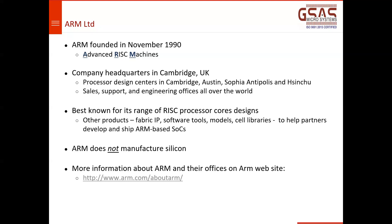Those peripherals include timers, UART, I2C, SPI, ADC, DAC, USB, Ethernet, SD card, and MMC or SD card controller. So an ARM processor can support any higher-end MCU with all the required infrastructure included in the processor itself.